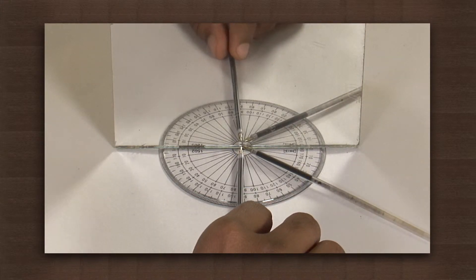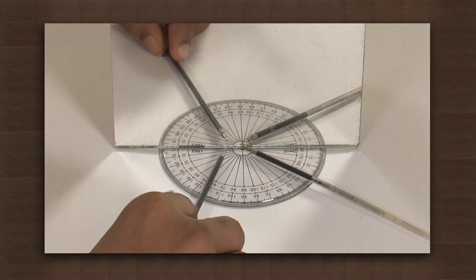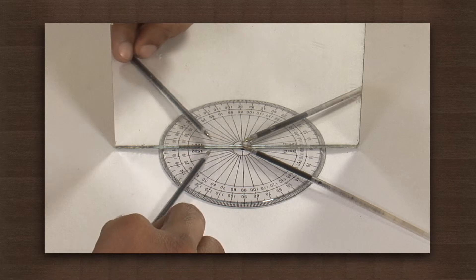Now take the other refill and keep it in front of the mirror in such a way that it exactly extends the image of the first refill formed in the mirror.